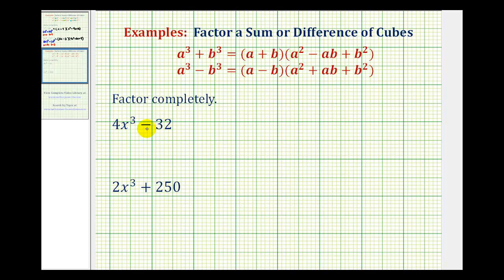Here we have 4x³ minus 32. But notice that 4x³ and 32 are not perfect cubes. But remember the first step in factoring is to factor out the greatest common factor. These two terms share a common factor of four.